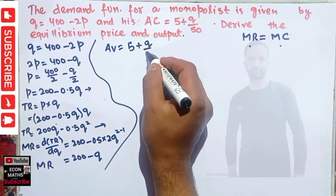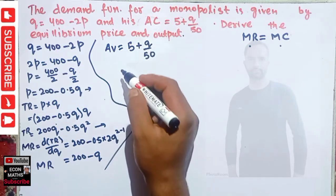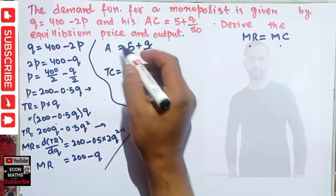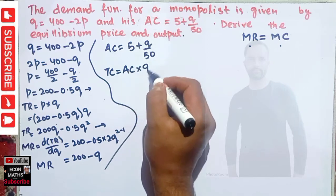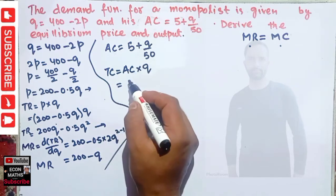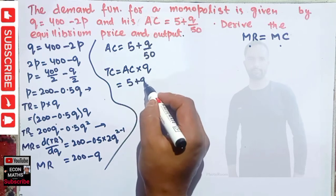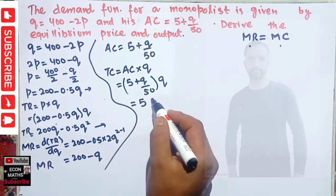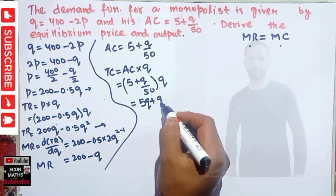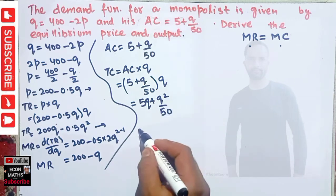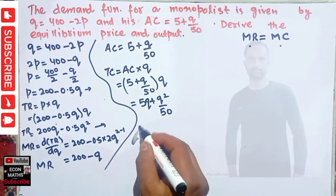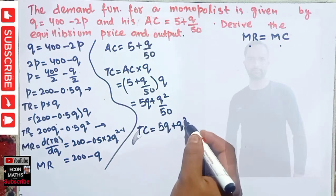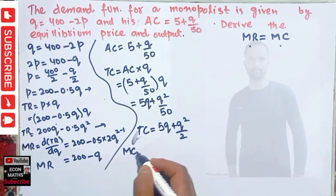We are given average cost AC = 5 + Q/50. To find total cost, we multiply average cost by quantity: TC = (5 + Q/50) × Q = 5Q + Q²/50.